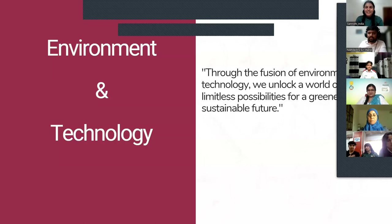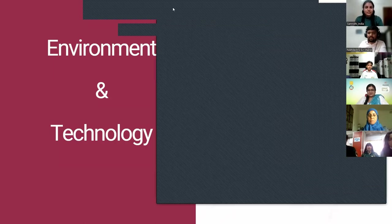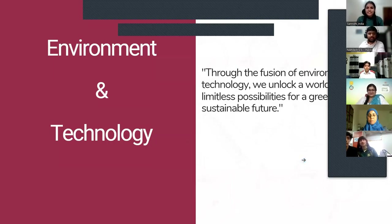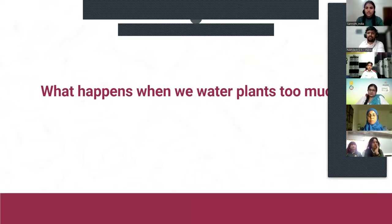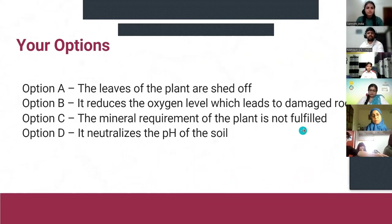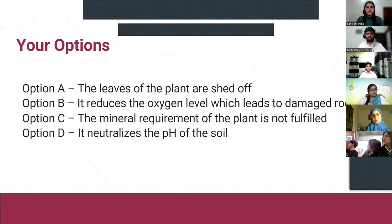Thank you, Nicholas sir. Hi everyone, I'm Sannidi from Nurture International School, Bangalore, India, and I'm associated with Cutie Pie Robotics. Hope you're all doing well. Before sharing my idea, let's start with the fun part — a quiz. You'll have 20 seconds to answer using the chat option. The question is: what happens when we water plants too much? Option A: the leaves of the plant are shed off. Option B: it reduces the oxygen level, which leads to damaged roots. Option C: the mineral requirement of the plant is not fulfilled. Option D: it neutralizes the pH of the soil.